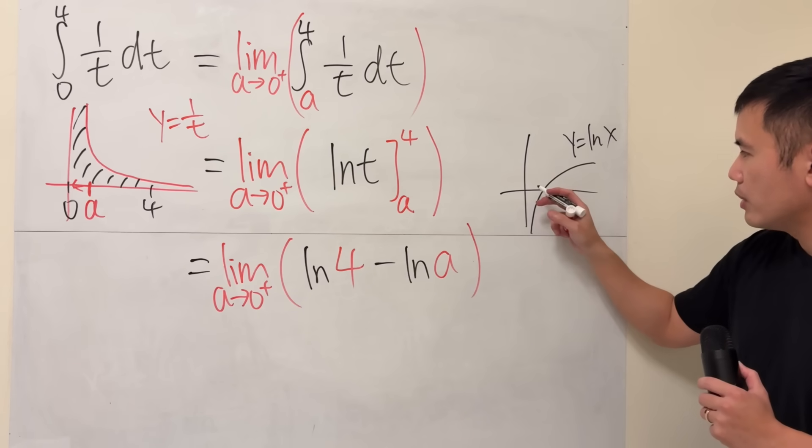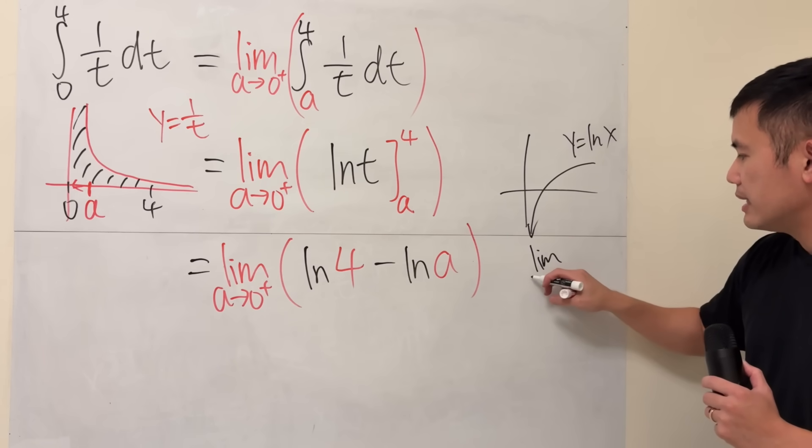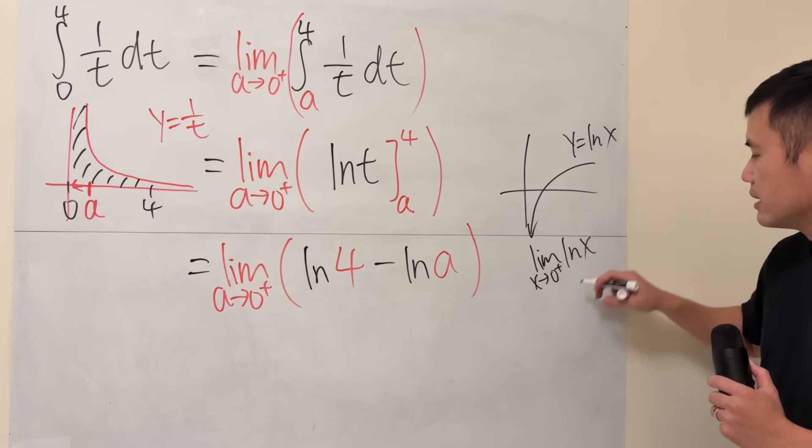As x approaching 0 from the right direction, you see that the function goes straight down, right? So the limit as x approaching 0 from the right-hand side of ln x, this gives us negative infinity.